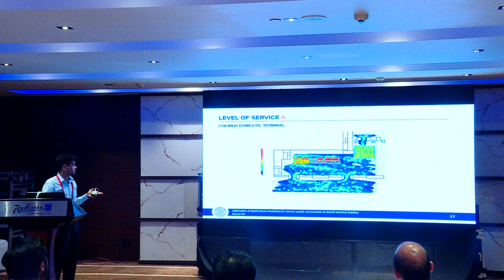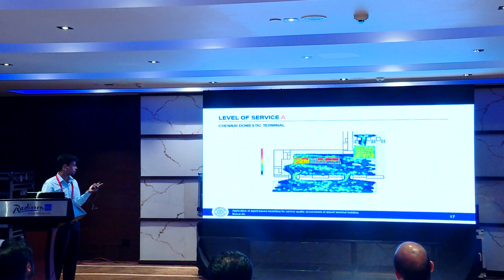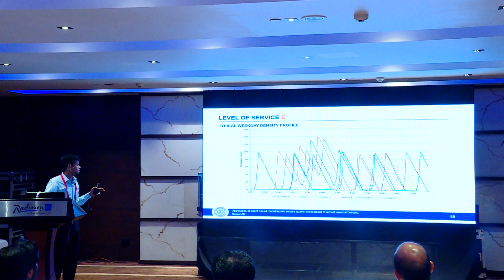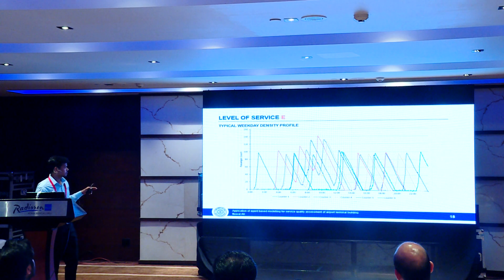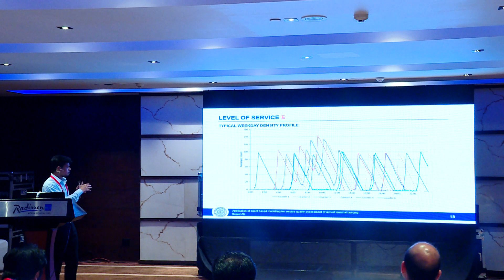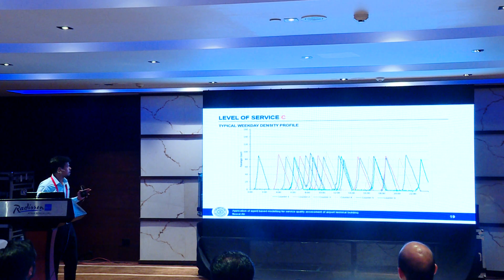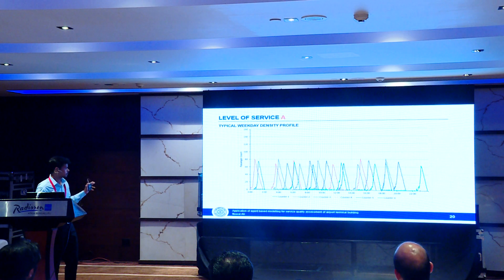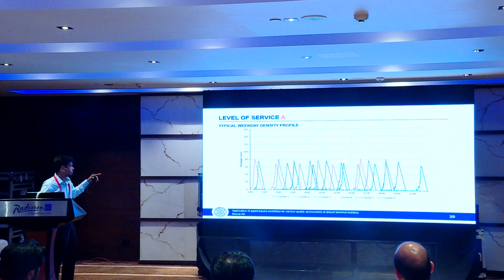In level of service A, two counters are operating at the same time, but the queuing line is relatively less. The density profile for level of service E shows more overlapping and a global peak. In level of service C, there is no global peak and overlapping is reduced. For level of service A, overlapping is almost eliminated and the maximum passenger count reaches only 80.